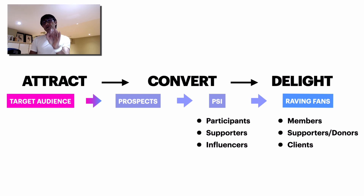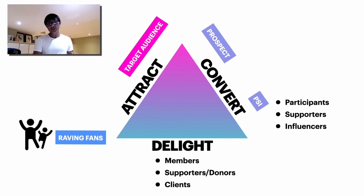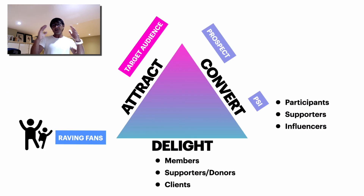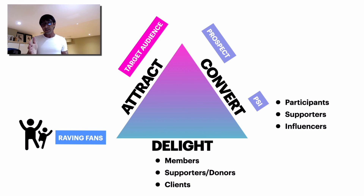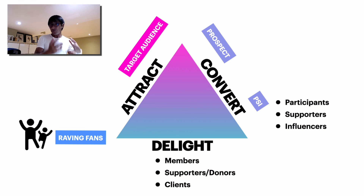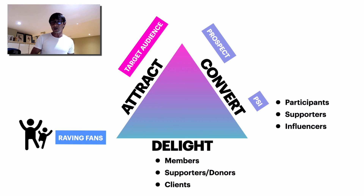This is a new marketing model, but it's not really linear — it is kind of a circle, in this case a triangle. So you start with Attract, then Convert, then Delight. And if you have a big group of raving fans, they're going to attract your target audience. So let's begin.